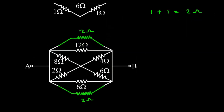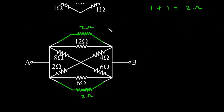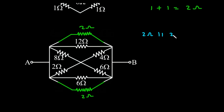Next, here we can see this 2 Ohm is in parallel with this 12 Ohm. So let's solve this — 2 Ohm parallel with 12 Ohm.